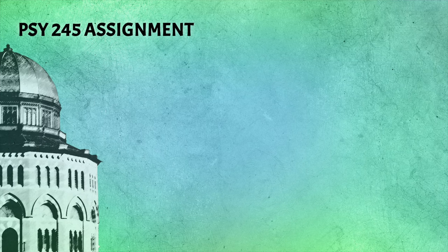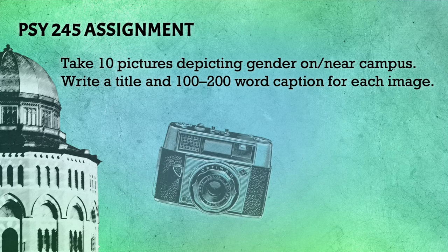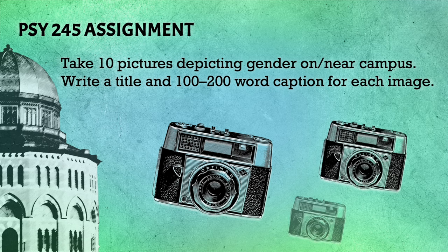Students were asked to take 10 photos on or near Union's campus that related to gender, and to put a title — a short, few-word title — and a one to two hundred word caption with each of these photos.